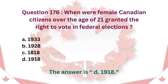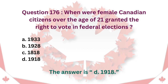Question 176: When were female Canadian citizens over the age of 21 granted the right to vote in federal elections? A. 1933. B. 1928. C. 1818. D. 1918. The answer is D. 1918.